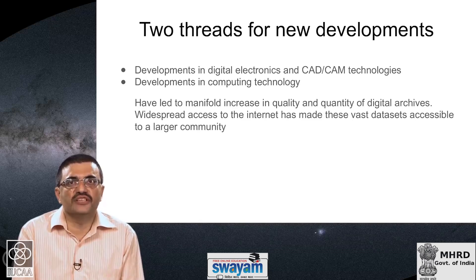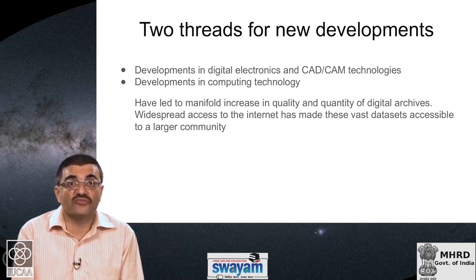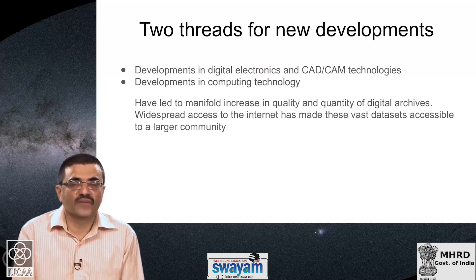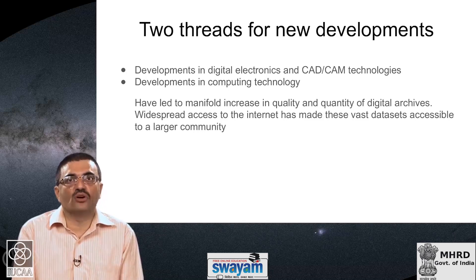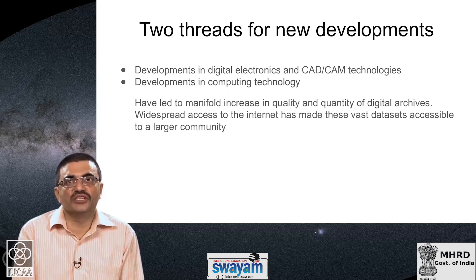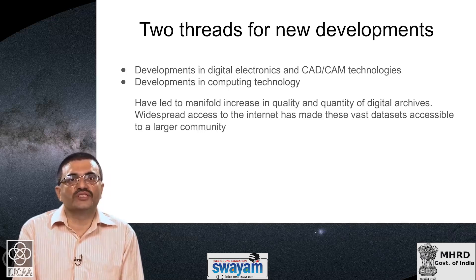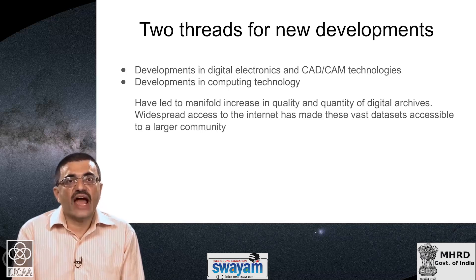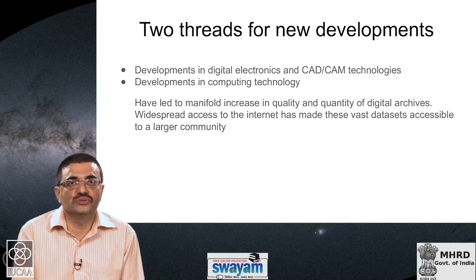There are broadly two threads for new developments. The first is related to developments in digital electronics and CAD/CAM technologies — computer aided design and manufacturing — which have enabled dramatic improvements in the kinds of telescopes we build and the speed and cost with which we build them. Developments in computing technology have also been nothing short of dramatic, and both have resulted in a big increase in the quality and quantity of digital archives in all disciplines, including astronomy. There is one more very important aspect: the widespread access to high-speed internet connections, which has made these vast archival data sets accessible to a much larger community.